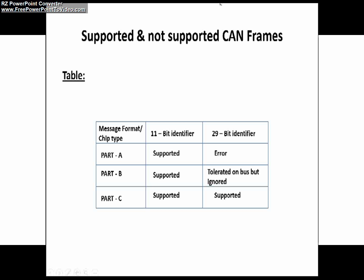Let's start with Part A. As you can see in this table, we are going to understand which frame formats are supported by Part A, Part B, and Part C, so we can choose the appropriate controller for our application. If you choose a Part A controller, it can support only the 11-bit identifier CAN frame format. If you want to communicate using the 29-bit identifier, it throws an error — meaning it cannot handle the 29-bit identifier CAN frame format at all.